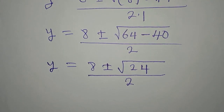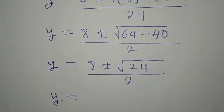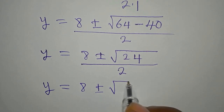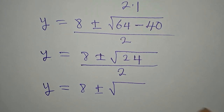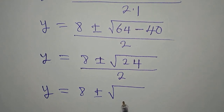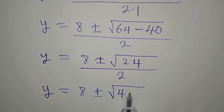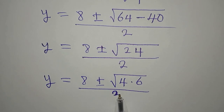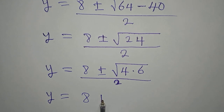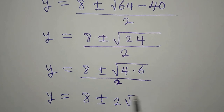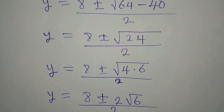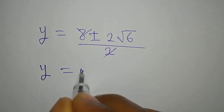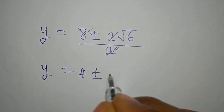But mind you, 24 here can be simplified. So y is equal to 8 plus or minus. Let's bring out the highest perfect square that is a factor of 24. The highest perfect square is 4, and it is 4 times 6, that will give us 24. So we divide this by 2. To continue, y will now be equal to 8 plus or minus: square root of 4 is 2, then we have root 6. This is over 2. So y now will be equal to: the 2 can go here, giving us 4 plus or minus root 6.